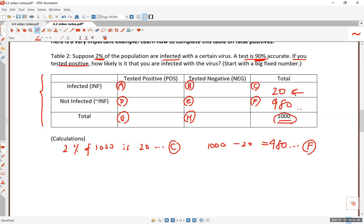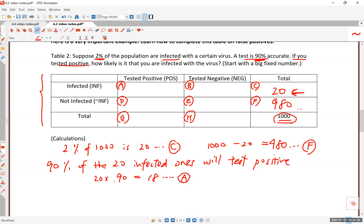Now let's look at the 20 people who are actually infected. 90% of the 20 infected people will test positive because they are infected and the test is 90% accurate. So what is 90% of 20 people? 20 times 0.9, which is 18. This 18 goes to box A—those who have the infection and tested positive.